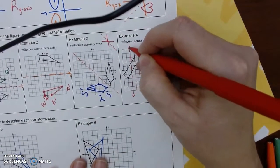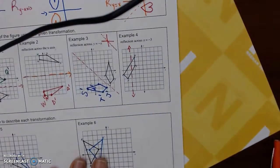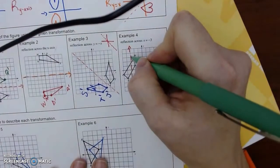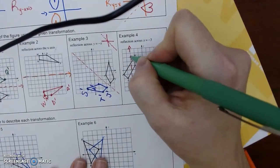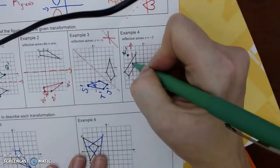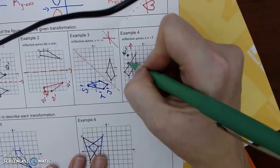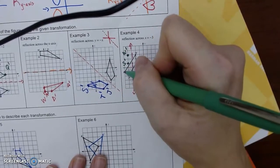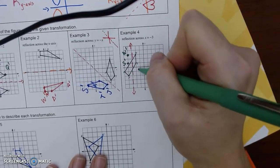So I'm going to use green. So W is one to the right, so we'll go one to the left. S, one to the right, so one to the left. I is two to the left, so two to the right. And P is one left, so one right.